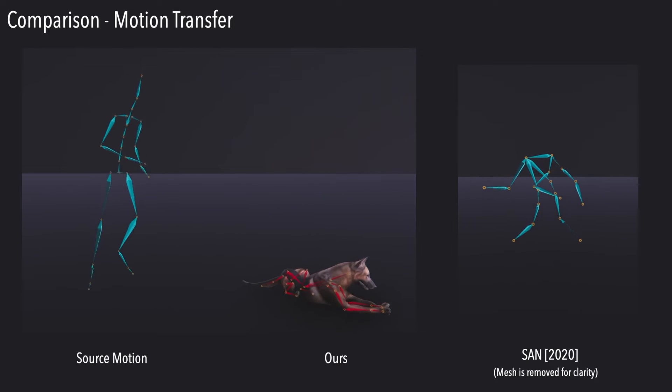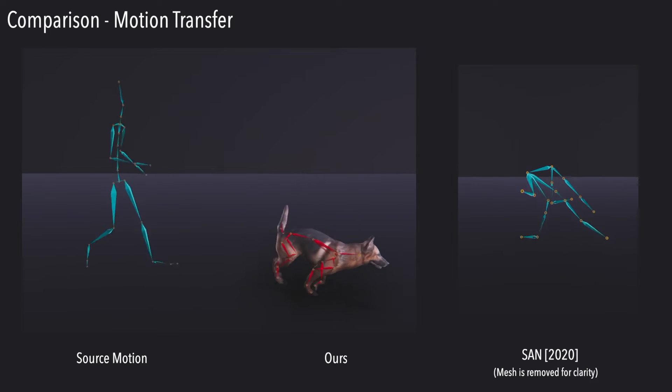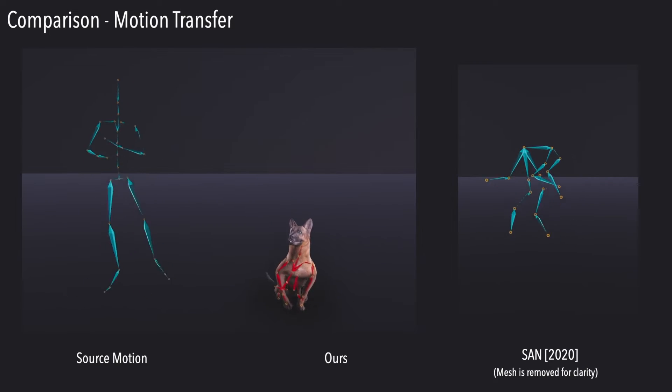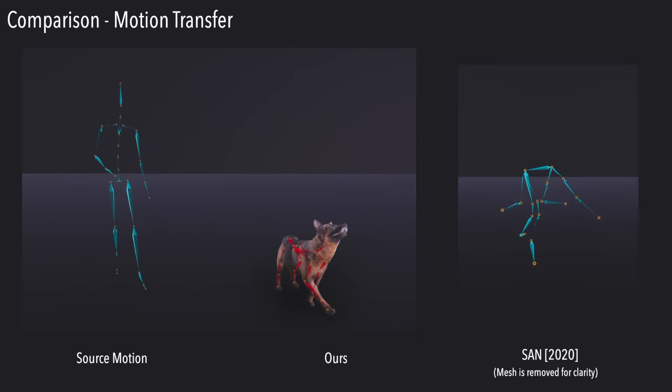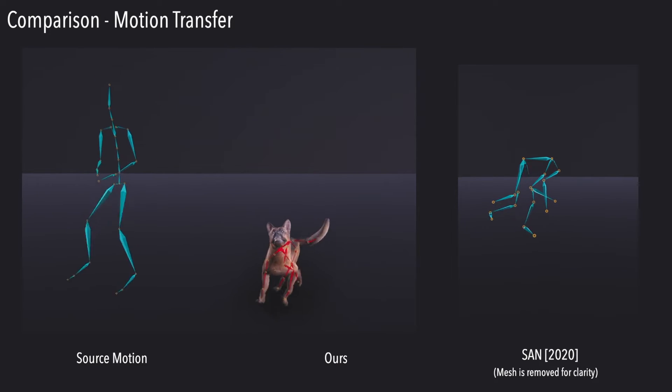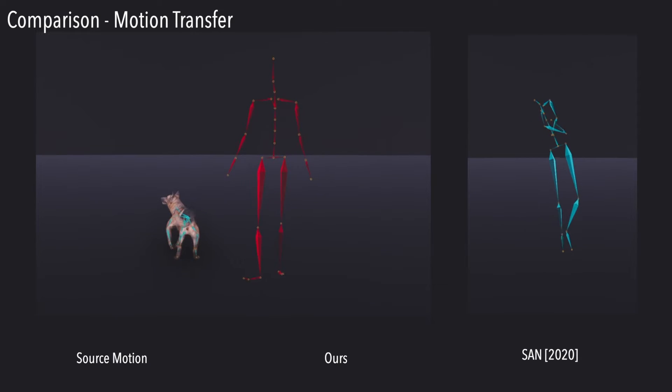Here we compare our method to the skeleton-aware networks. It can be seen that due to the drastic difference of input and target skeletal structure, skeleton-aware networks struggle to keep in stable adversarial training and generate implausible results.